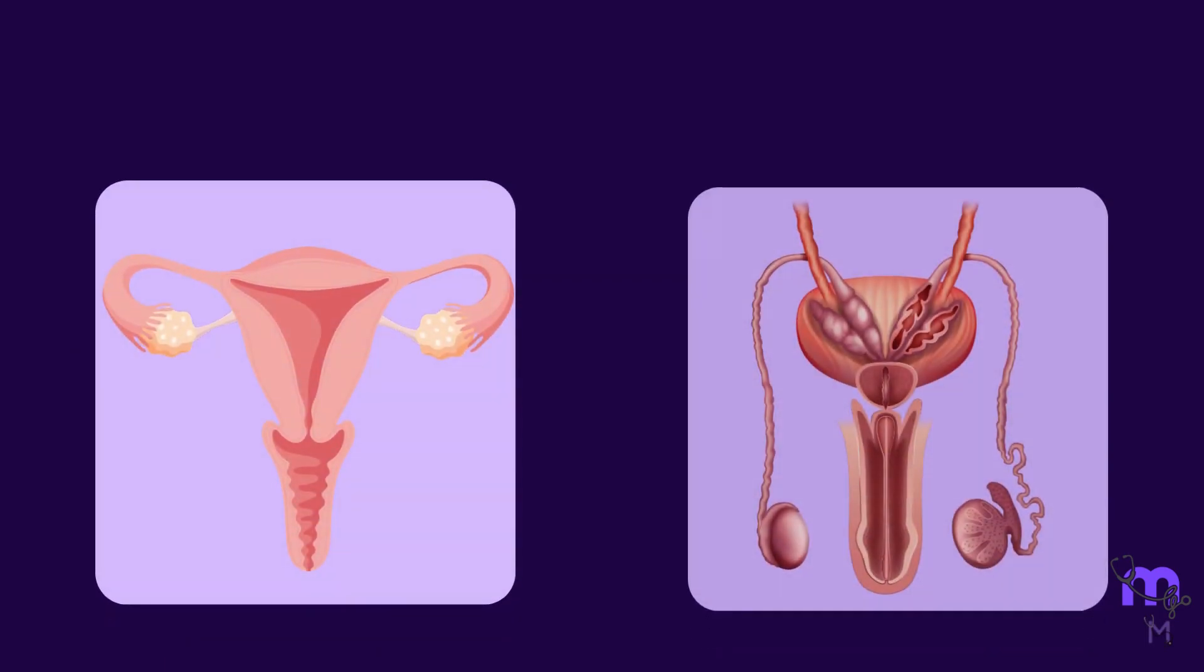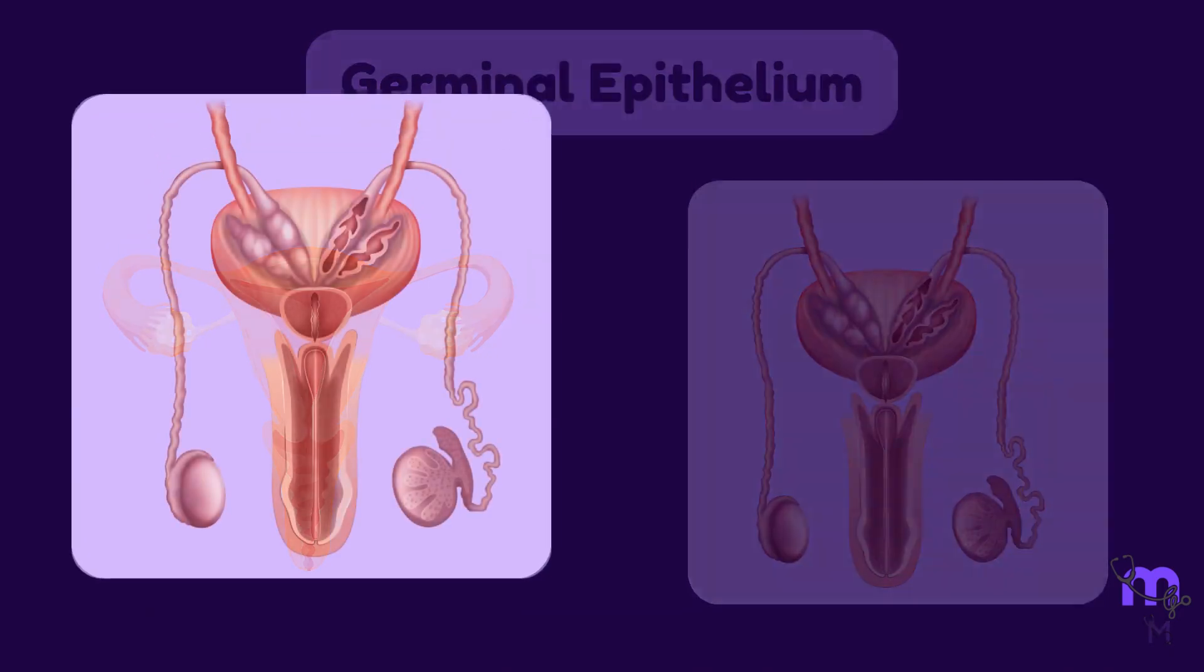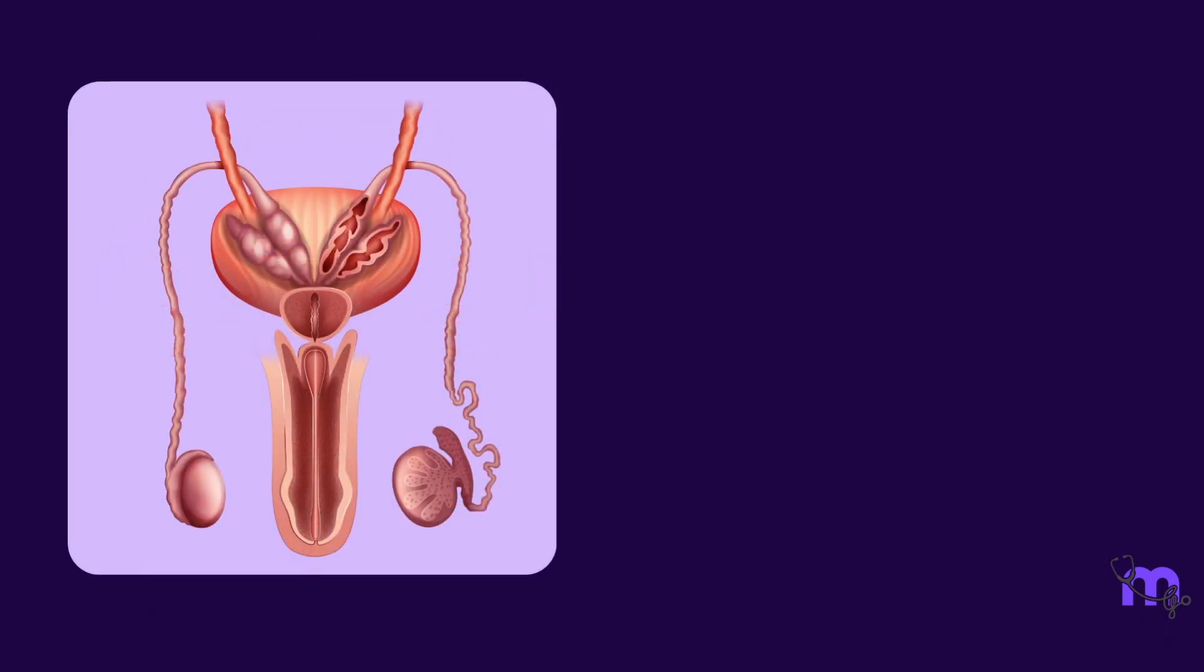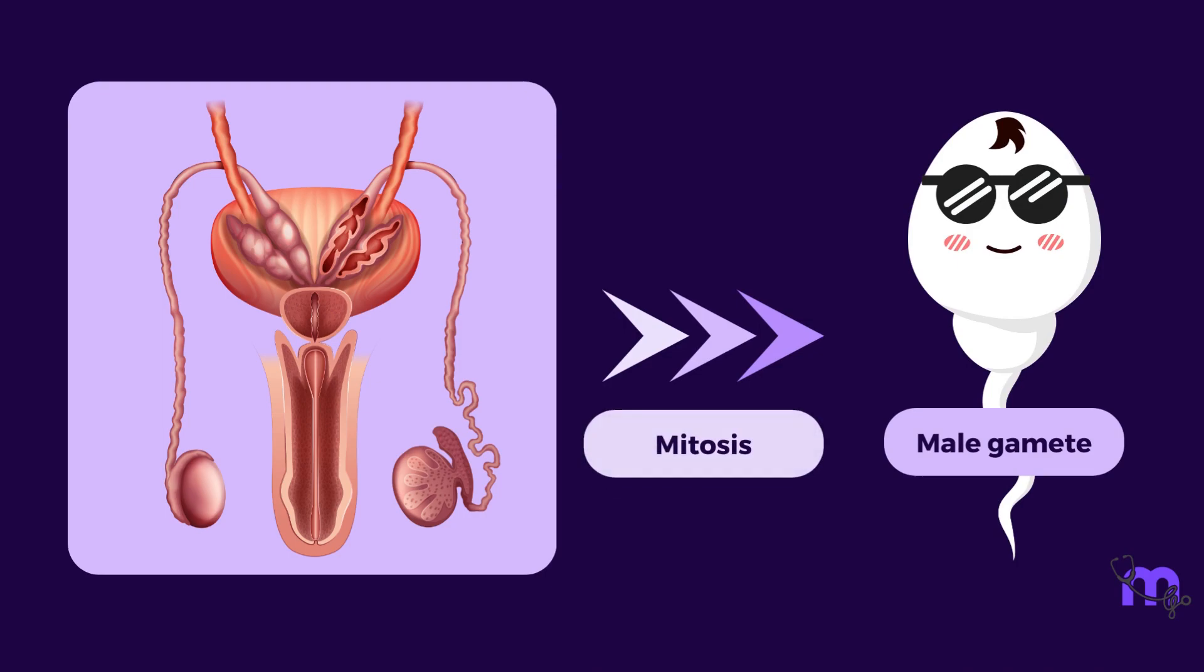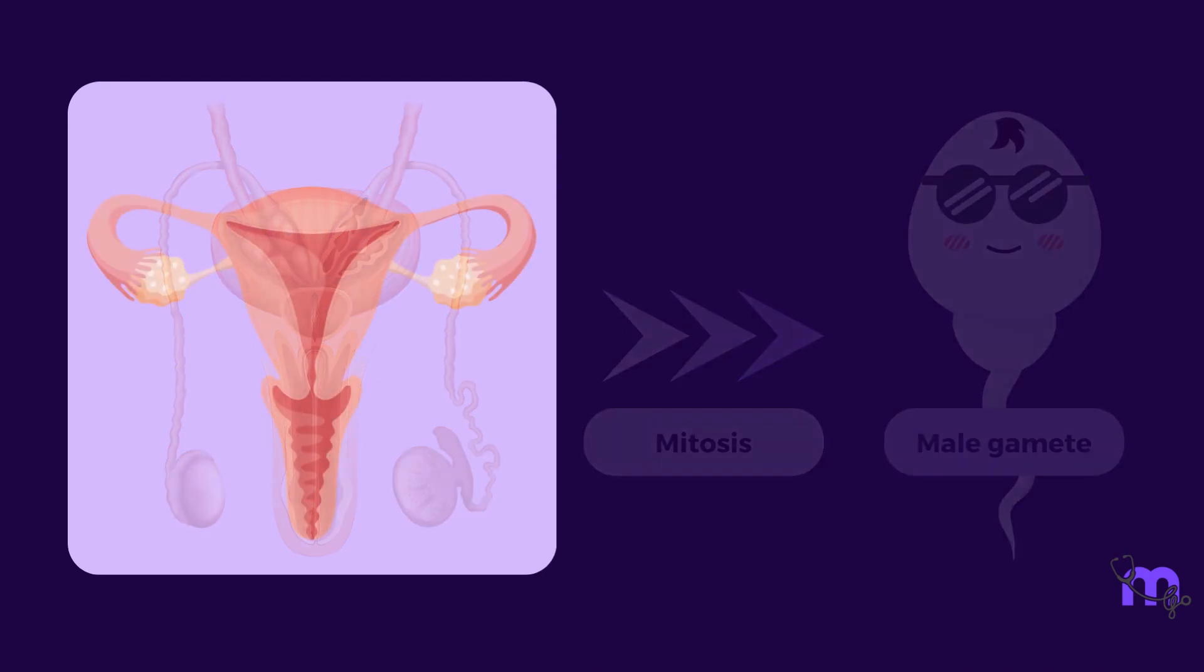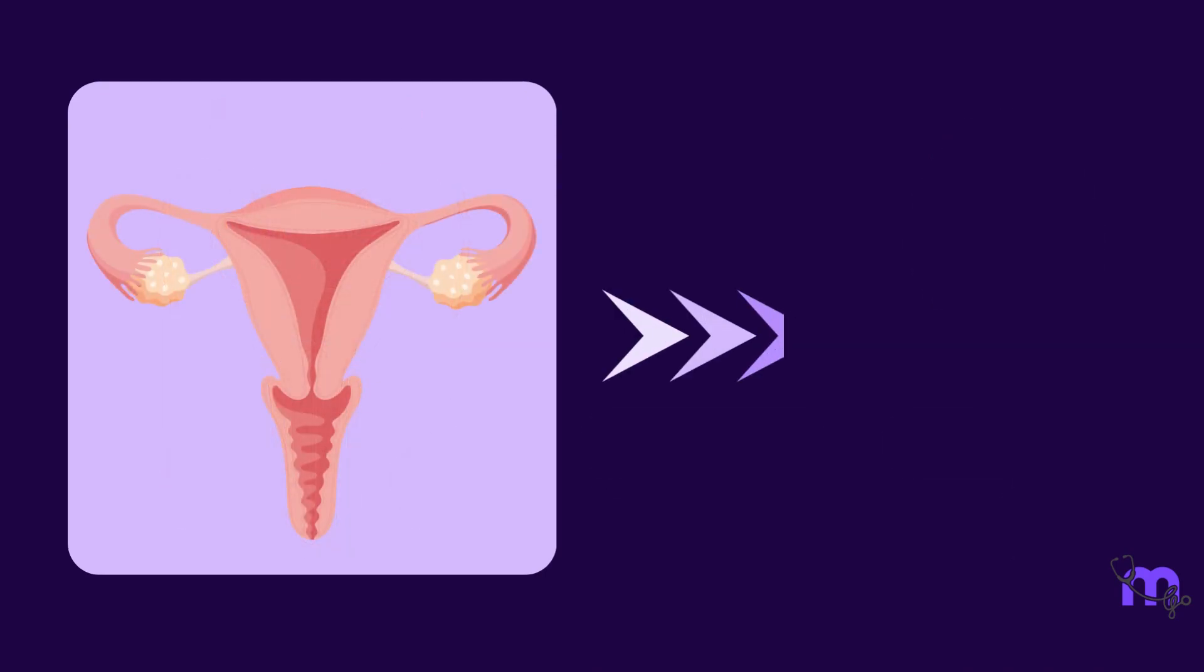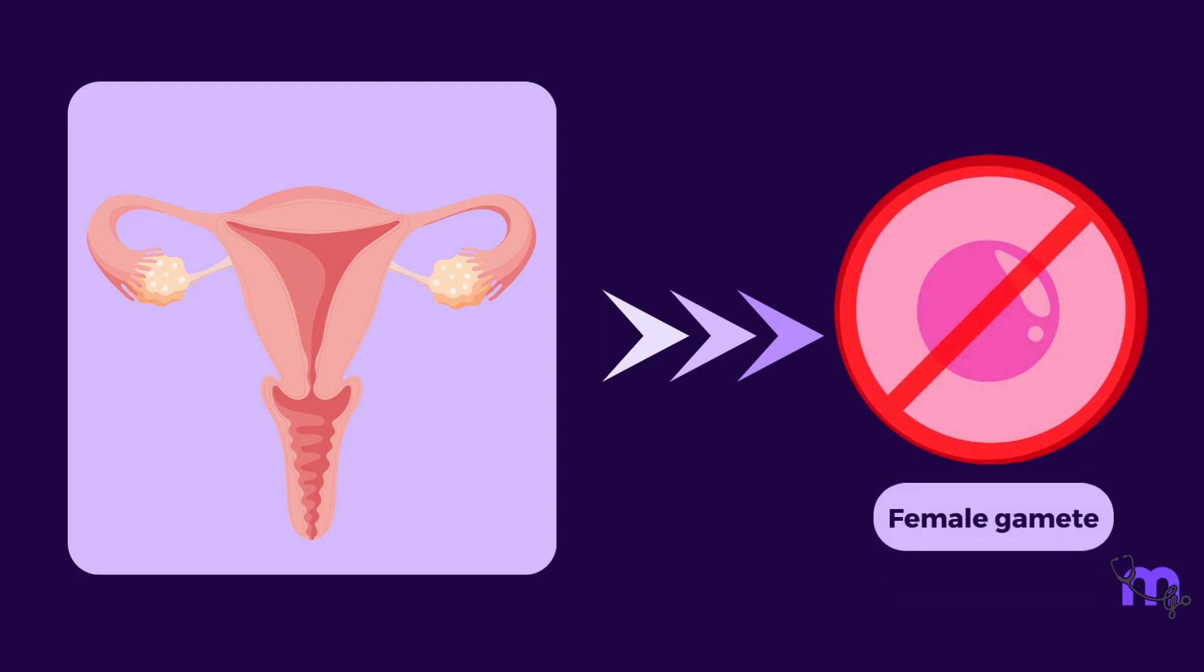Cuboidal epithelium that lines the ovaries and testes is called germinal epithelium. In males, it is involved in the production of gametes by undergoing mitosis. Here it is important to note that in females, the germinal epithelium does not participate in the production of the ovum.